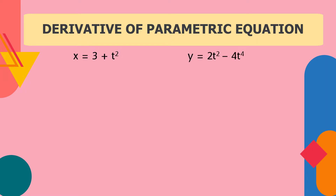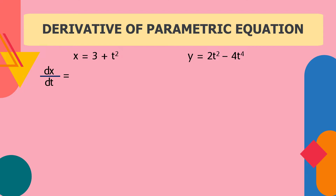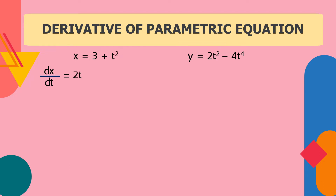First, we're going to get the derivative of x with respect to t. What is the derivative of 3 + t²? As we know, the derivative of a constant is 0, so the derivative of 3 is 0. For t², we use the power rule: power times the base raised to the power minus 1. So the derivative of t² is 2t.